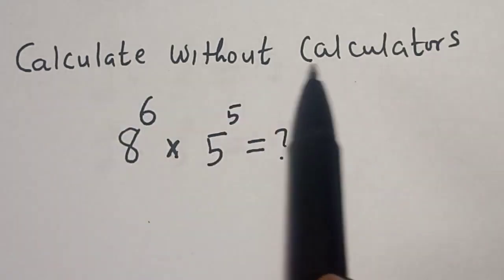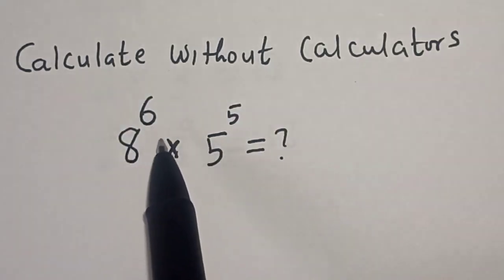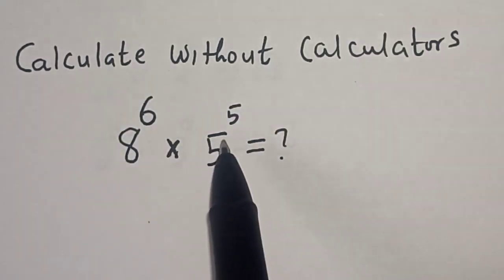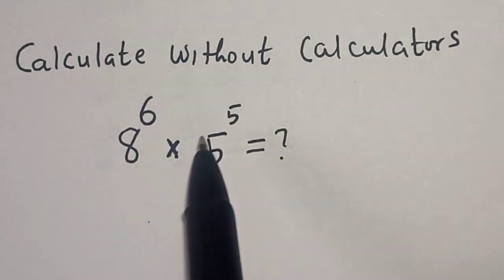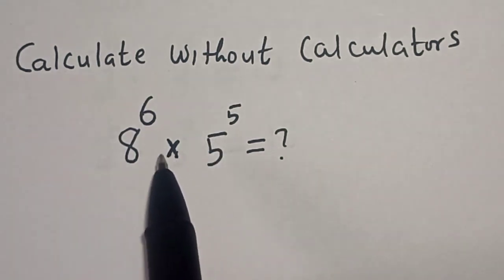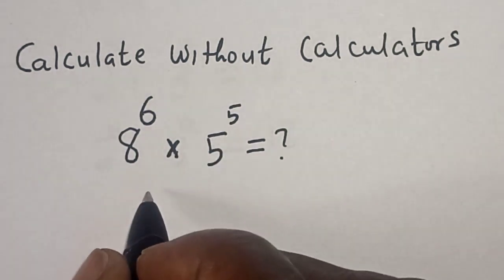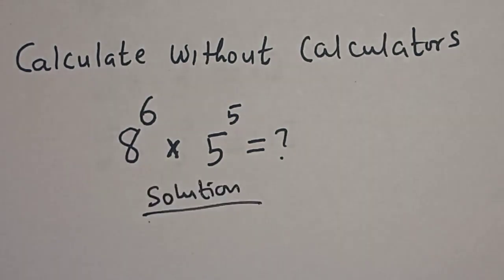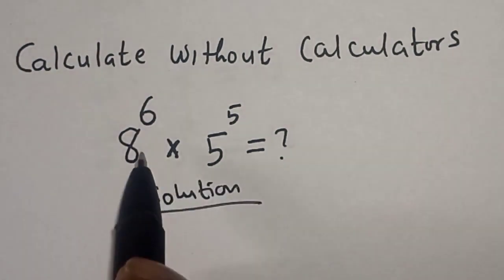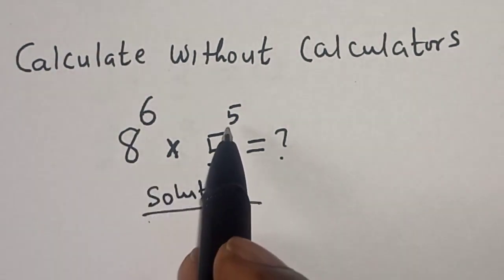We want to calculate 8 raised to power 6 multiplied by 5 raised to power 5 without our calculators. But before we proceed, please don't forget to like, share, comment and subscribe. Solution: we have 8 raised to power 6 multiplied by 5 raised to power 5.